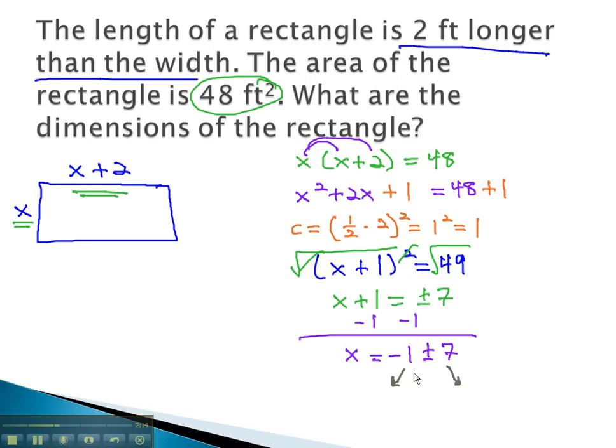Considering our two possible answers, one where we add and one where we subtract, negative 1 plus 7 is 6, and negative 1 minus 7 is negative 8. However, it would not make sense to have a negative dimension on our rectangle. So x, the width, must be 6, and the length is x plus 2, or 6 plus 2, which is 8. We have a 6 foot by 8 foot rectangle.